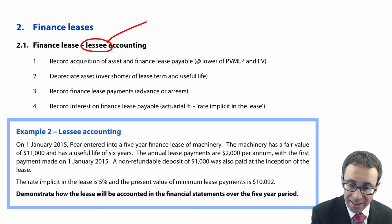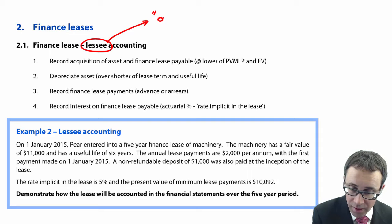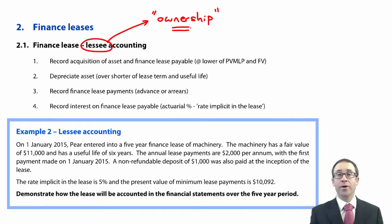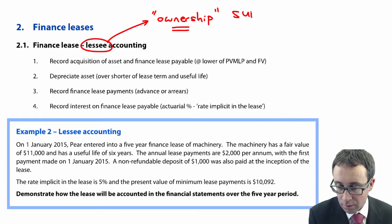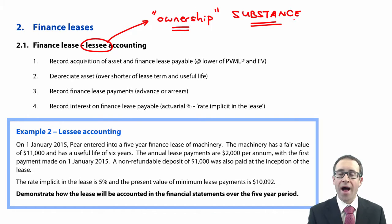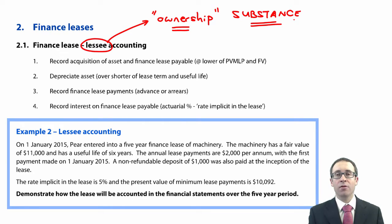When we're looking at the lessee's accounting based on a finance lease, what we're considering is ownership. Legally we do not own it, but in substance — which is what we like to account for in the world of financial reporting — in substance we do have ownership of that asset. Essentially we control that asset over the lease period. So the way in which we account for it is in a four-step manner.